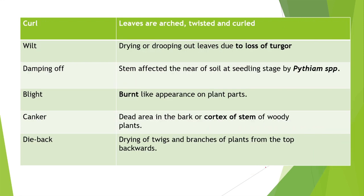Next is curled: the leaves are arched, twisted, or curled — this condition is called curled. Next term is wilt: the drying or drooping of leaves due to loss of turgor is known as wilt. Mosaic viruses generally cause wilting symptoms in which plants start shedding leaves.